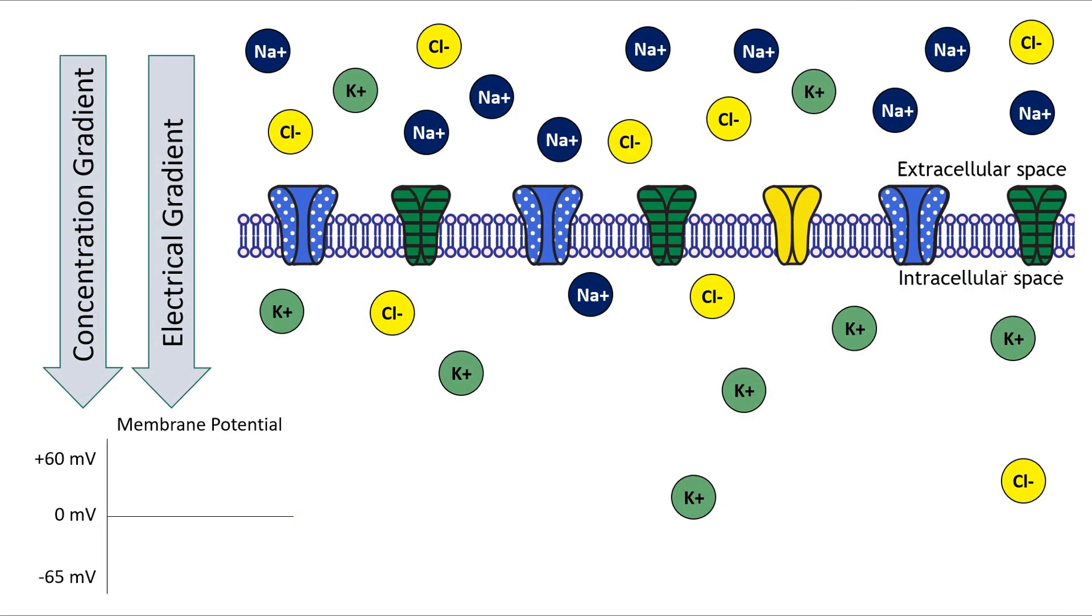Now, if you all remember, the ion's equilibrium potential is the membrane voltage at which the ion's electrical gradient and concentration gradient exactly balance each other. At that specific voltage, there is no net movement of the ion.